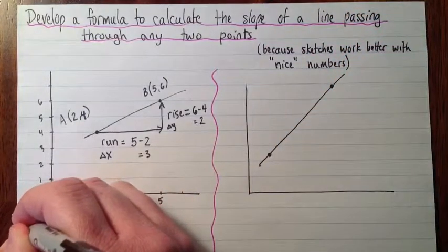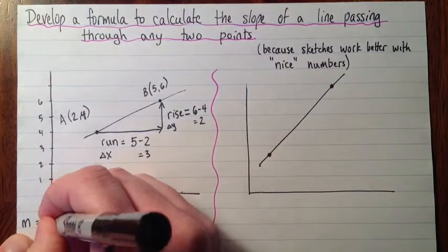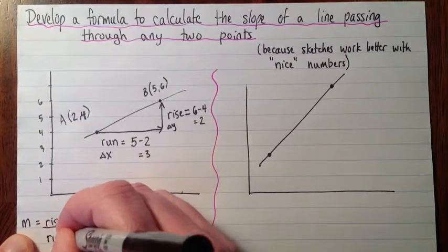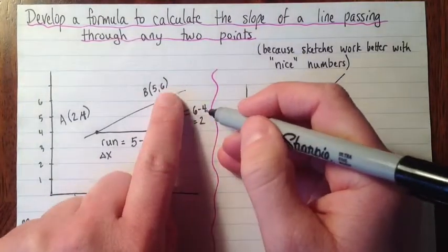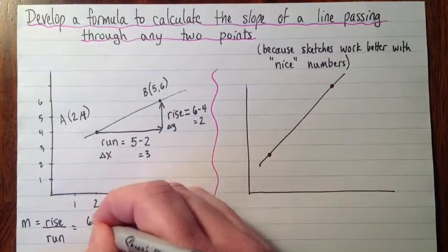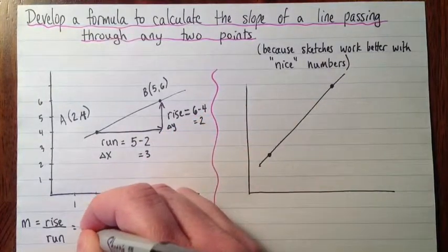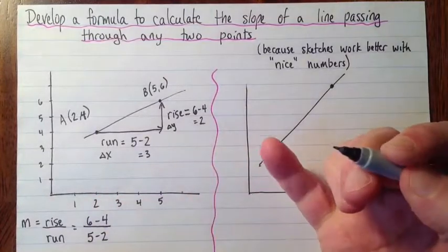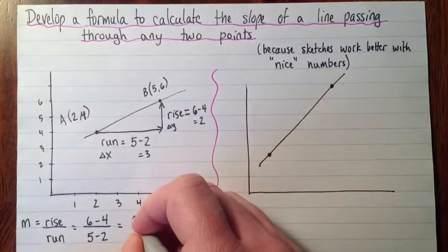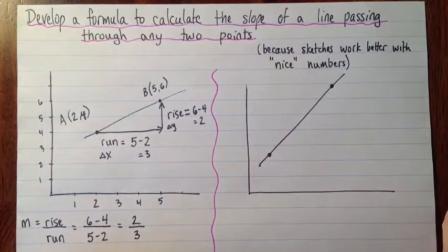So down here, let's write what we did. The slope is equal to rise over run. And the rise was 6 minus 4. And the run was 5 minus 2. That right there is actually the part we're going to need. But let's finish this off. The 6 minus 4 we said was 2. And the 5 minus 2 we said was 3. So the slope was 2/3.